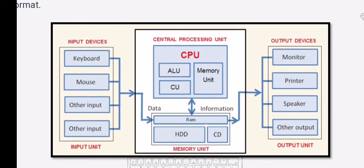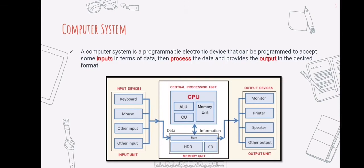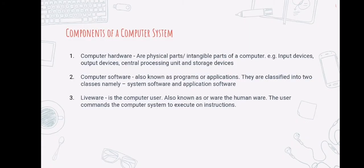The hardware and software components of a computer system are both present. The hardware components are physical components that are mounted within the computer case, and some of which are also externally connected. The computer system must be directed to perform various user-specified operations, which necessitates the use of a program that directs the computer hardware. The term software also refers to a computer program.